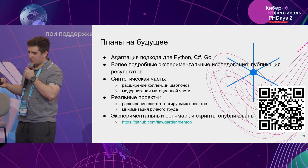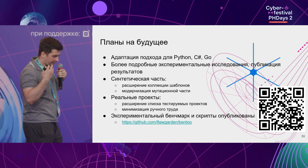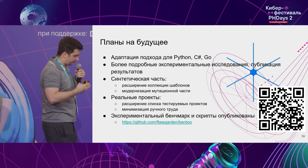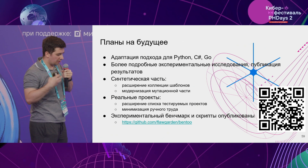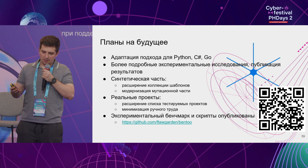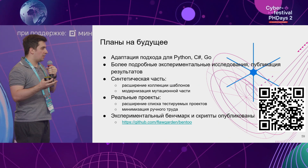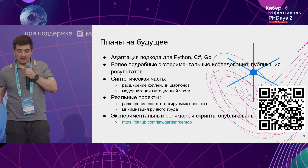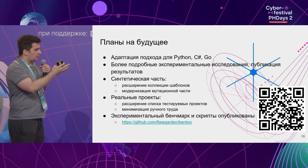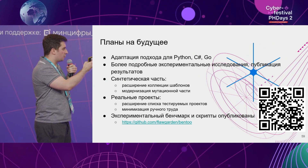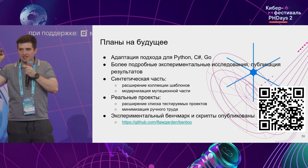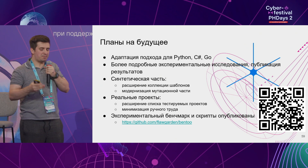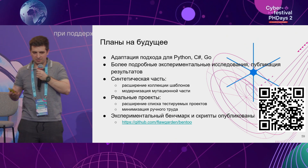What are the plans? First, we are going to extend the synthetic part of the benchmark and the collection of templates — methodologies will possibly be improved as well. We will also improve automation in forming the real part of the benchmark to reduce manual work. Then we'll complete the benchmark for Java, then make it for Python, C#, Go, conduct big experimental research, and publish the results. The experimental benchmark is already published — you can go to the repository, which has all the readmes, scripts, and contacts if you want to write a few words.